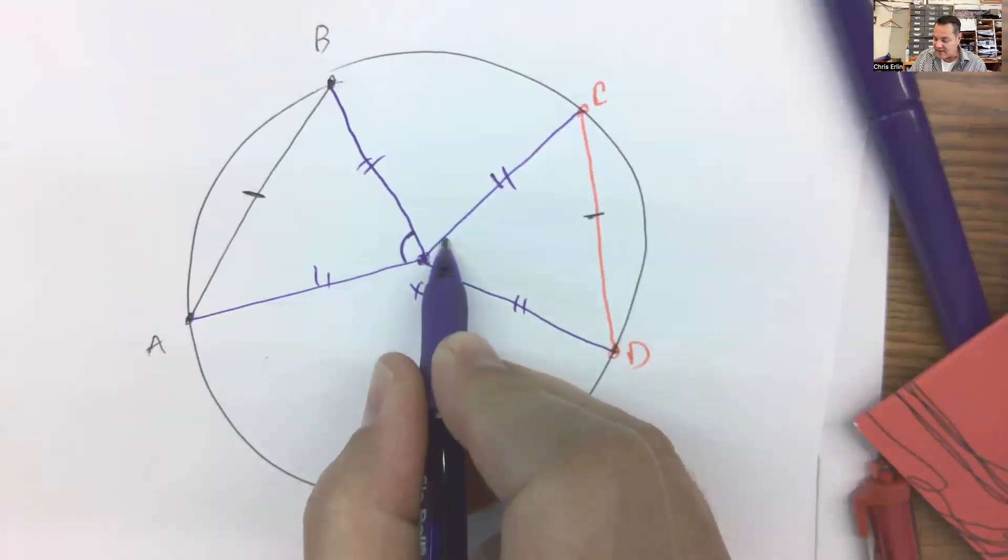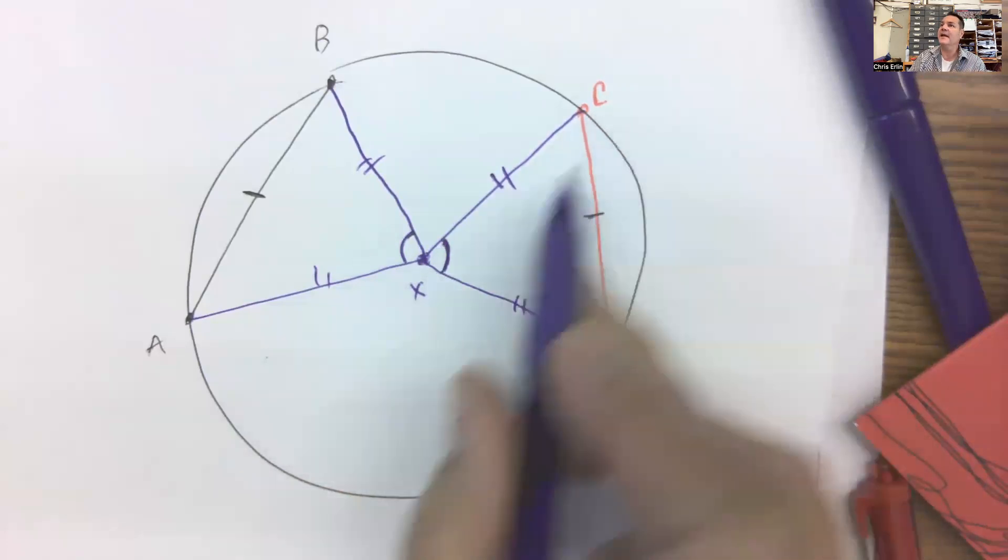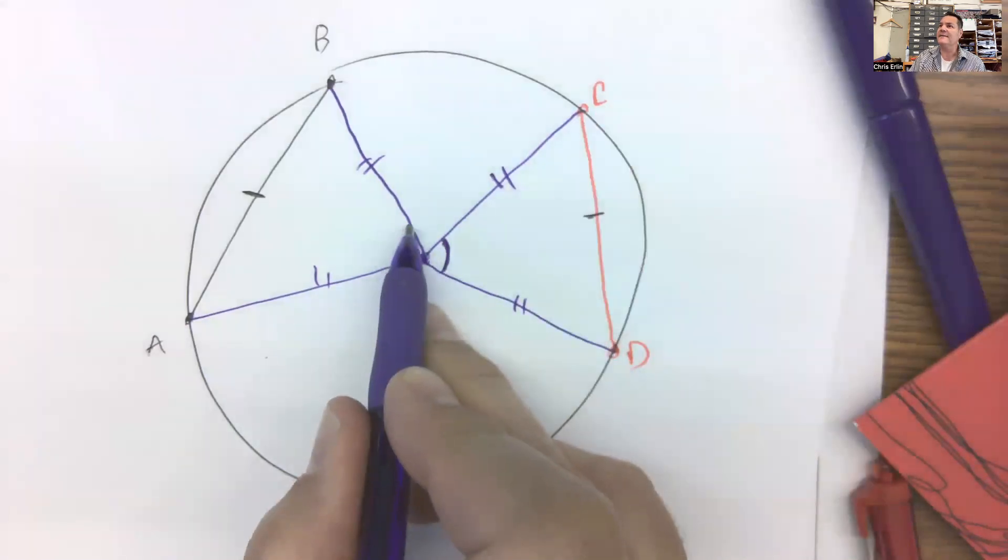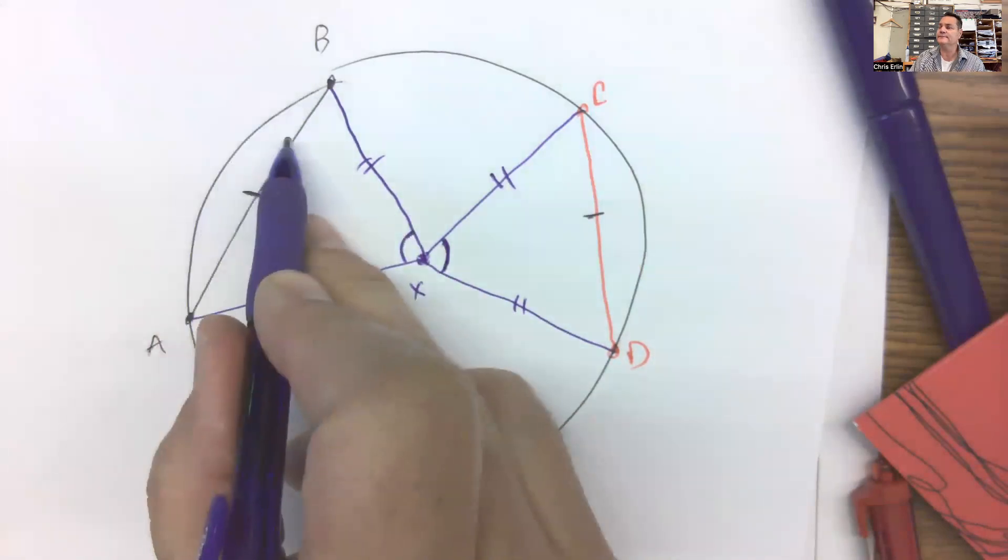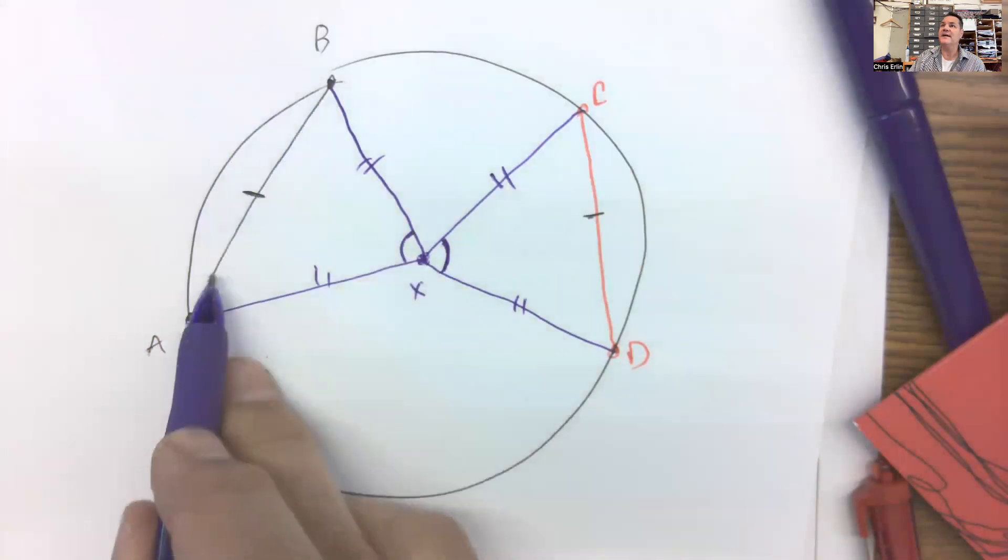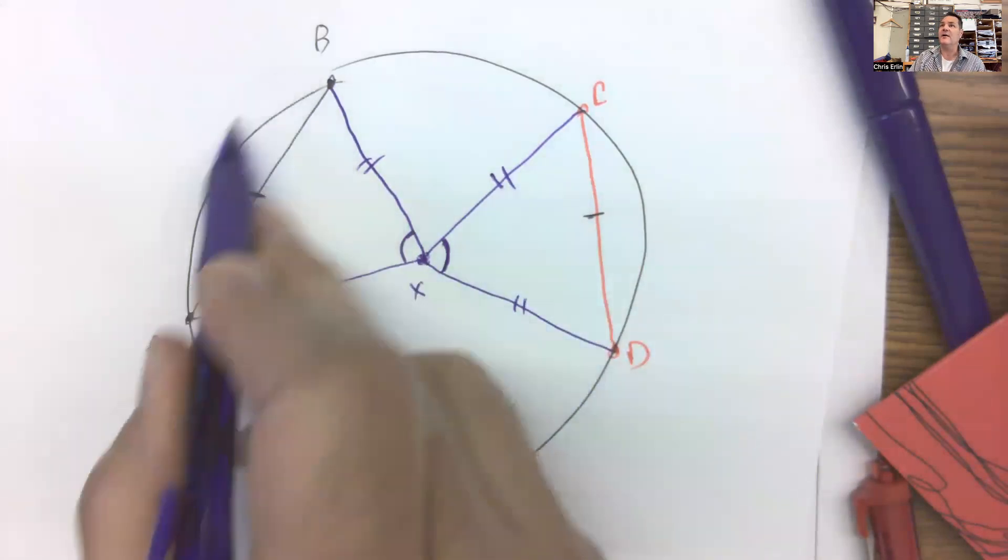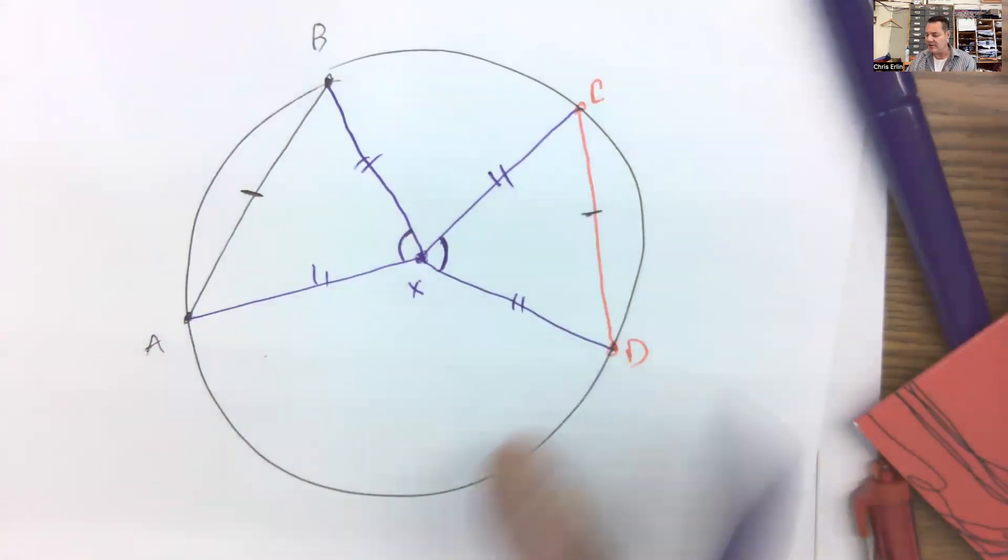Now, if this angle is, I don't know, let's say 50 degrees, how big would this arc be? Yeah, this is a central angle. So wouldn't the arc be the same size? And if this angle were congruent, also 50 degrees, how big would this arc be? Right. So in other words, if you've got two chords that are congruent in a circle, then the arcs intercepted by those chords will also be congruent.